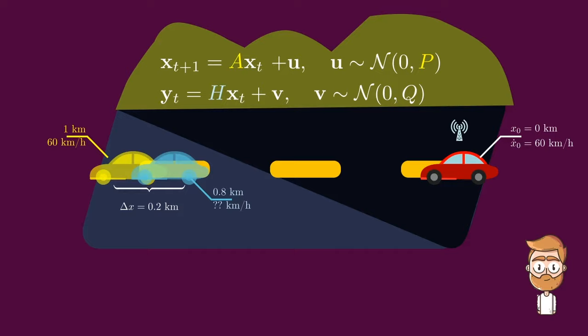Now you look at this picture and you need to decide by how much you need to correct your prediction based on this surprise term. And for that, you need to see how much you trust your prediction, which is measured by this covariance matrix, and how much you trust your measuring instruments, which is measured by this covariance matrix.